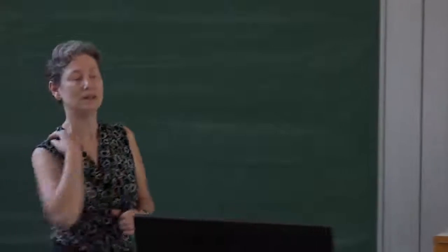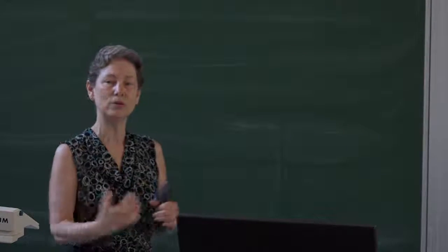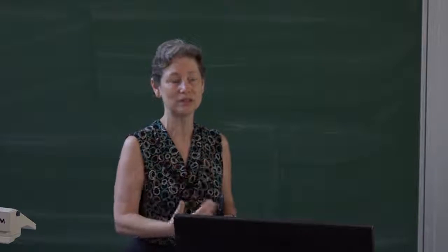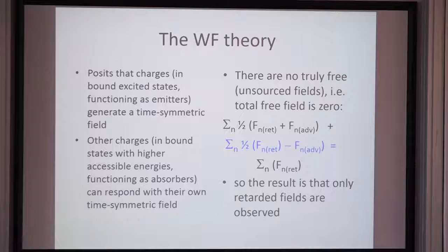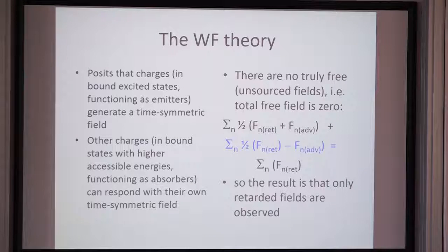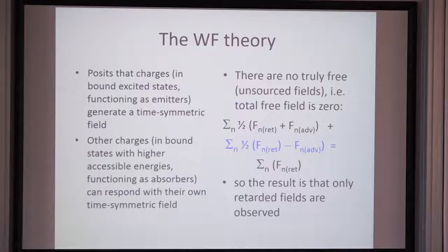That's what Wheeler and Feynman didn't like — the ad hoc nature. Their motivation was also to avoid self-interaction, which in the classical field led to infinities. So instead, what they said was: a charge — and here I'm adding that the objects that can radiate in this manner are bound excited states, which is what I mean by an emitter. Take an atom and an electron in an excited state in that atom — that's really what we mean by an emitter. Other charges in bound states that can be excited to higher energy levels function as absorbers. These absorbers actively respond with their own time-symmetric field — that's the new idea that comes with the absorber theory.